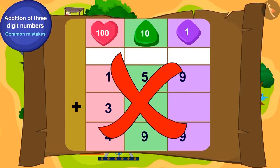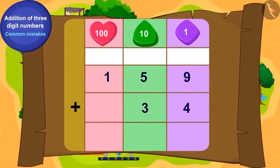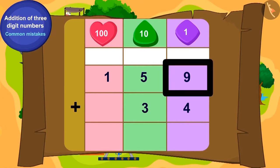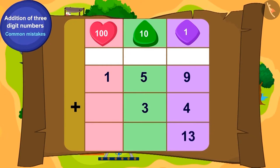Children, can you solve this addition by writing it correctly? Now, have we written this addition correctly? How many ones will we get by adding 9 ones and 4 ones? 13. Now, how do we write 13 ones?